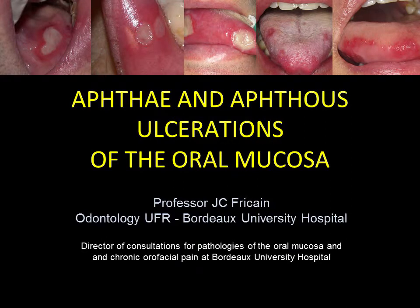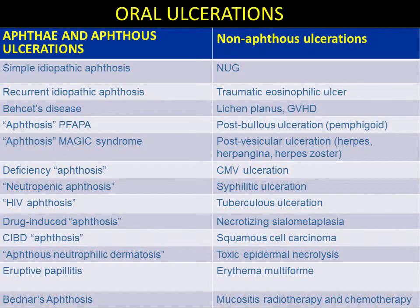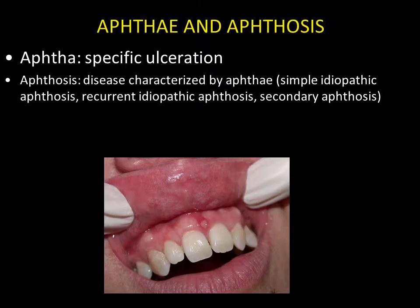Ulcerations of the oral mucosa are classified as aphthous and non-aphthous. When considering aphthae and aphthous ulcerations, idiopathic aphthae must be distinguished from aphthae that are secondary to a general pathology, which must be systematically sought in conditions associated with recurrent forms. The basic lesion is the aphtha, characterised by a yellowish fibrinous base associated with peripheral erythema.